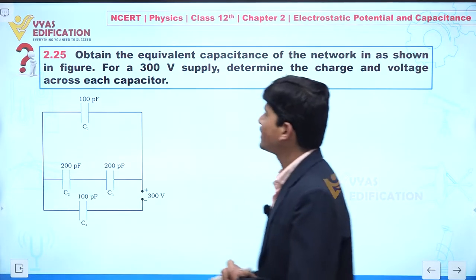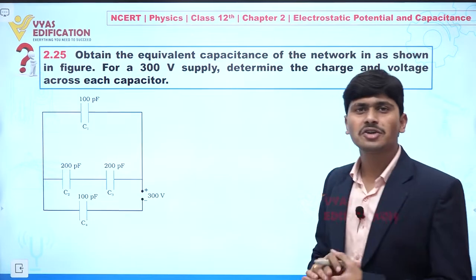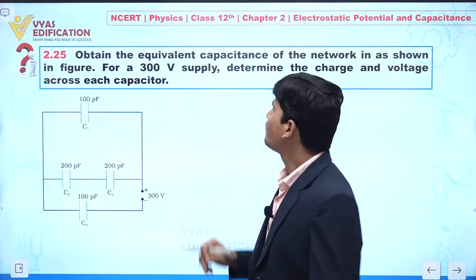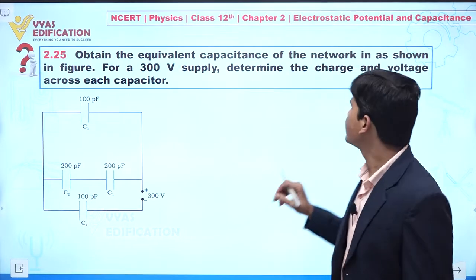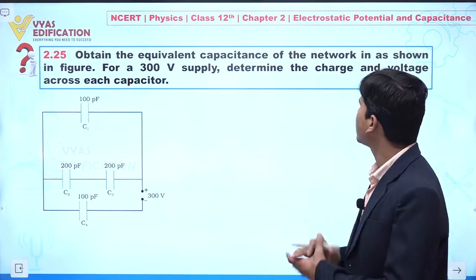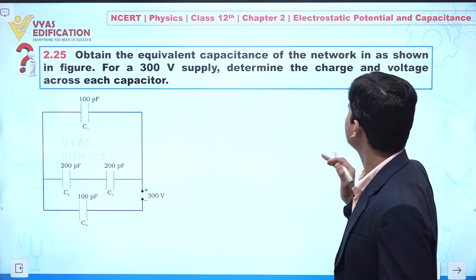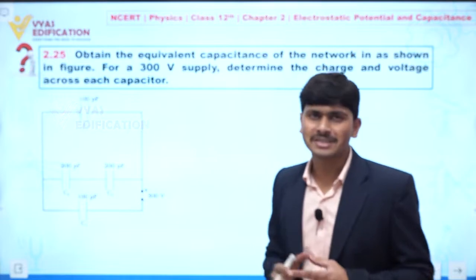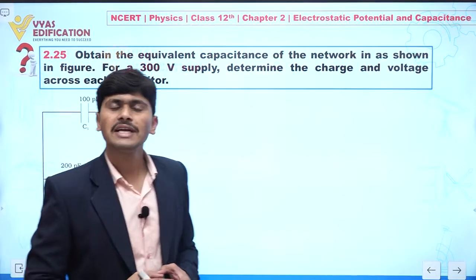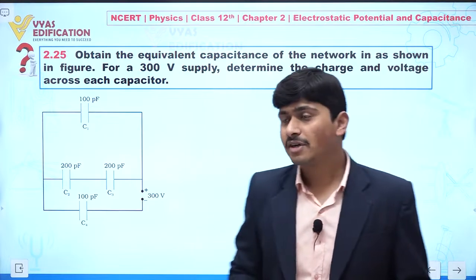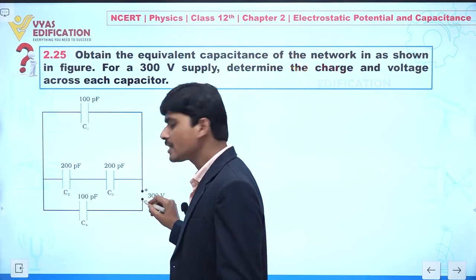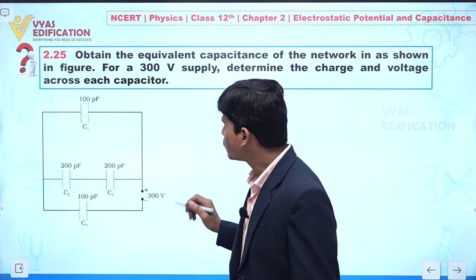We are going to discuss question number 2.25. In this question, you are asked to obtain the equivalent capacitance of the network shown in the figure for a 300-volt supply, and to determine the charge and voltage across each capacitor. Let us first try to understand this circuit. The battery is connected at this point.